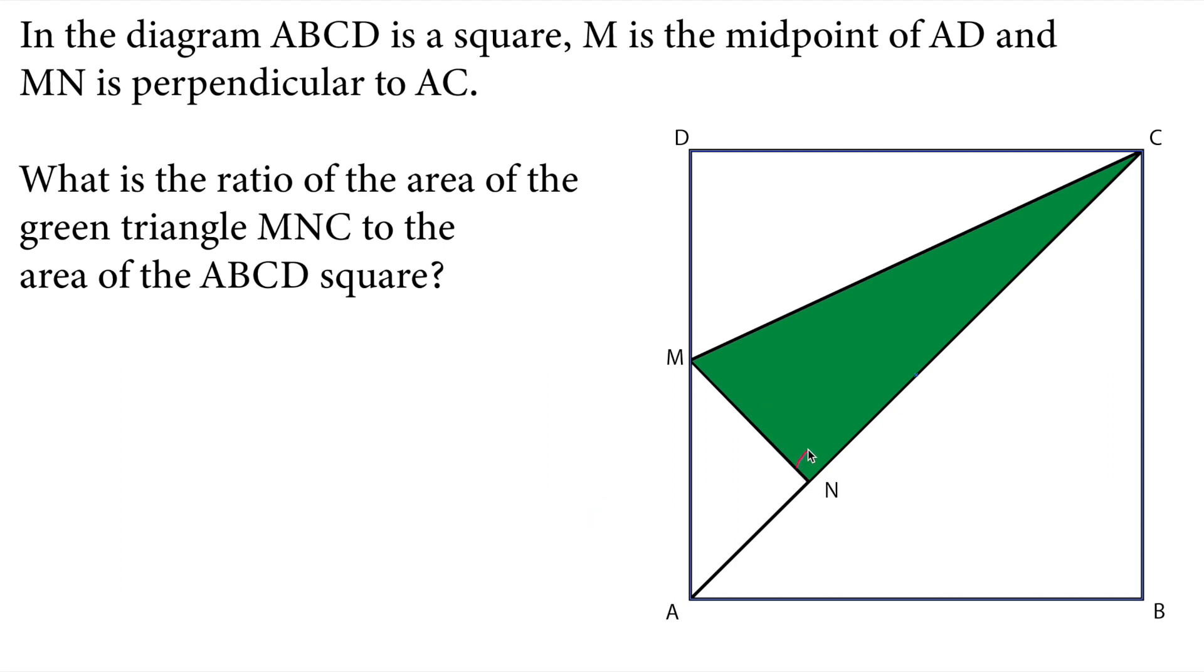Let's put information given to us on the figure, so this is a perpendicular line, it's a right angle right here, so it's a right triangle, also this is a right triangle, so we need to find the area of this triangle and then we need to compare it to the square area.